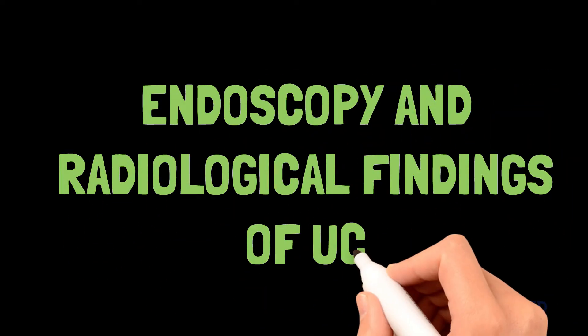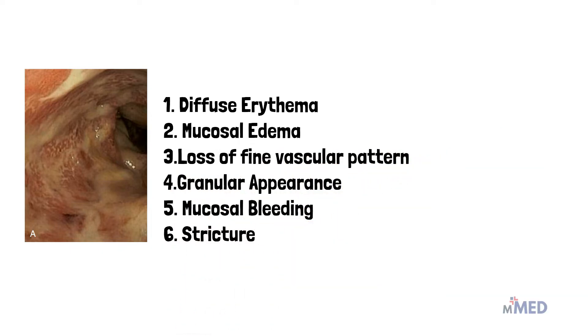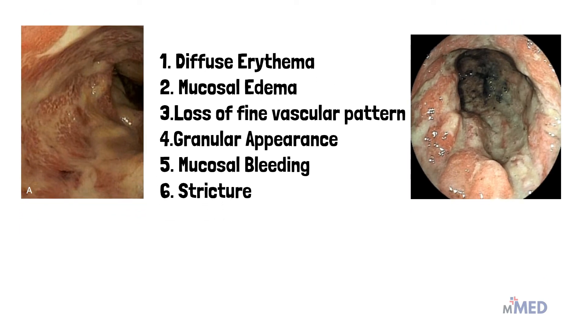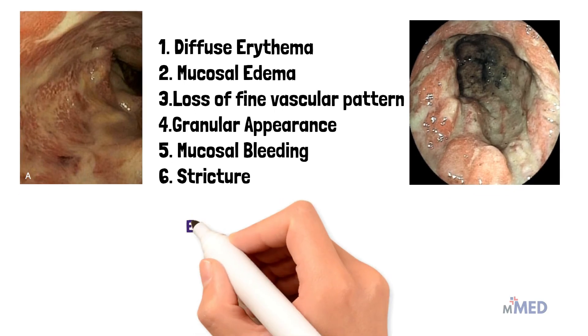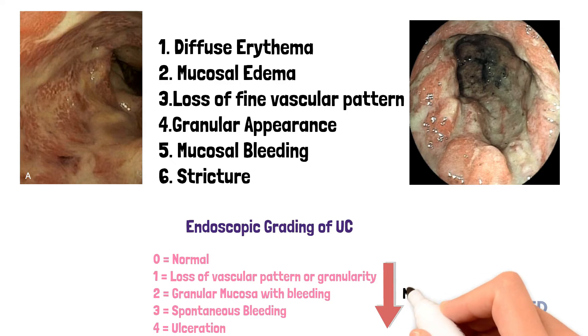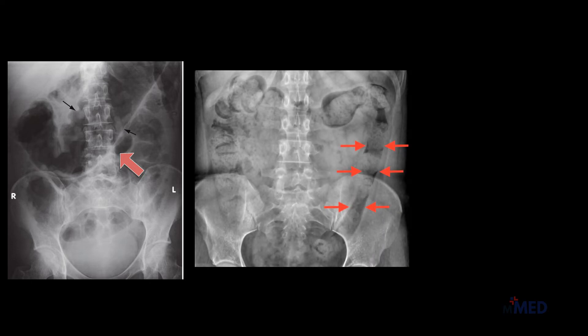On endoscopy, findings include diffuse erythema, mucosal edema, loss of fine vascular patterns, and a granular appearance with mucosal bleeding and strictures — though strictures are more common in Crohn's disease. There is a standard endoscopic grading of ulcerative colitis from 0 to 4, with 0 being normal and 4 being ulceration. A plain abdominal x-ray may show a grossly dilated colon; dilation greater than 6 cm indicates toxic megacolon. The haustra disappear and the colon looks straightened — this is the lead pipe appearance.